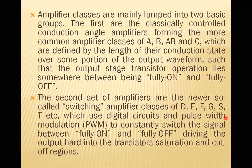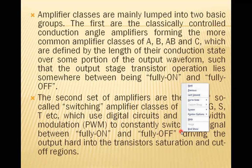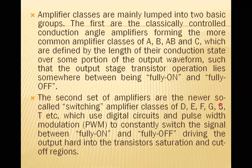The second set are newer, so-called switching amplifier classes: D, E, F, G, S, T, etc., which use digital circuits and pulse width modulation to constantly switch the signal between fully on and fully off, driving the output hard into transistor saturation and cutoff regions. The active region is the region between the cutoff region (transistor fully off) and the saturation region (transistor fully on).